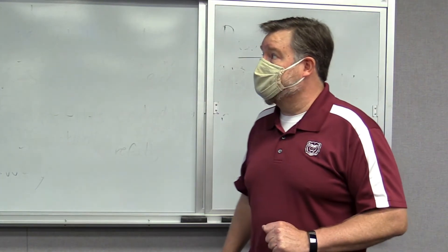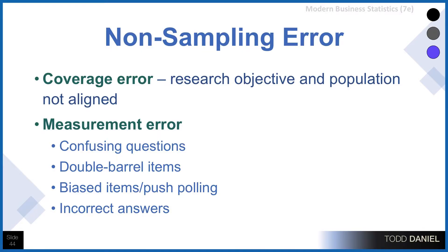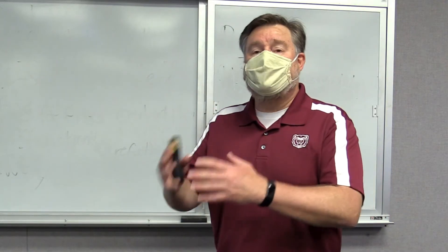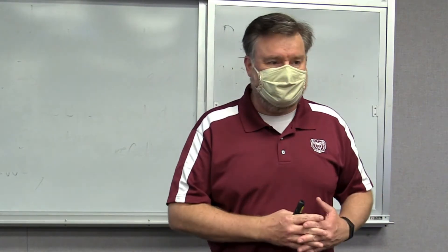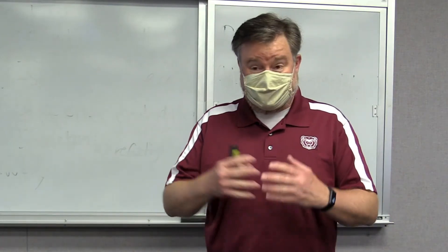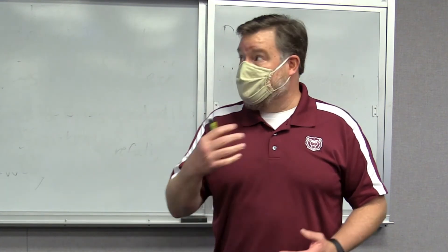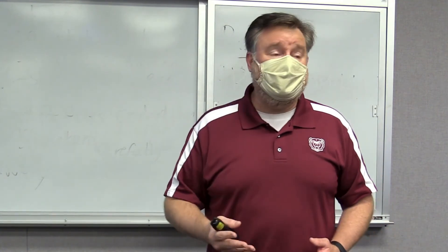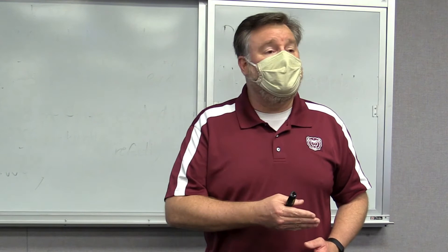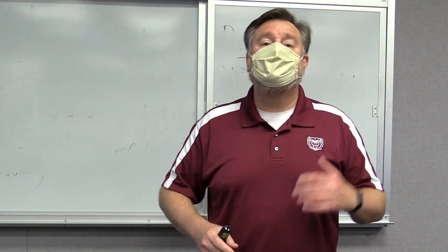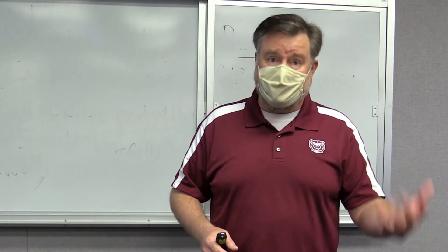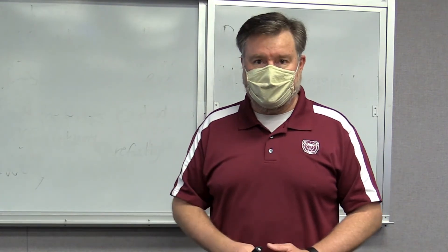Coverage error is where the research objective and the population are not aligned — the research question doesn't match the population that we have chosen. Basically, these people don't have that answer. And when we have a coverage error, the conclusions we draw can be off wildly because we're asking the wrong people about our research question.